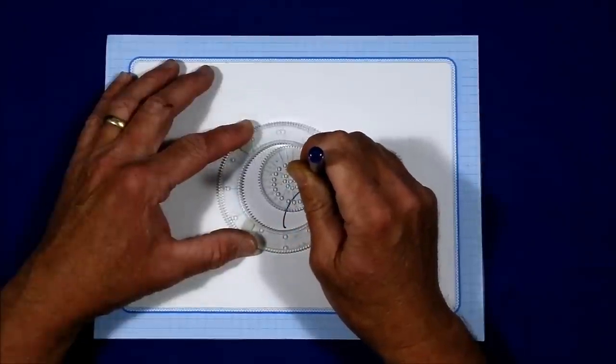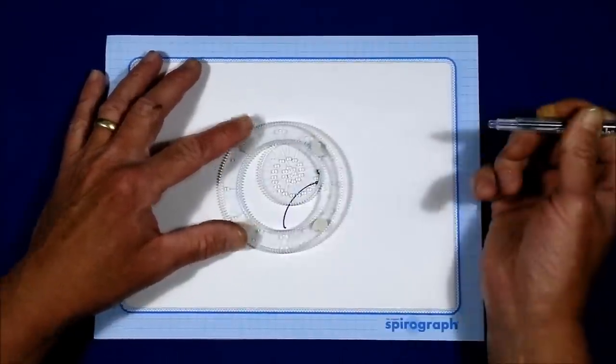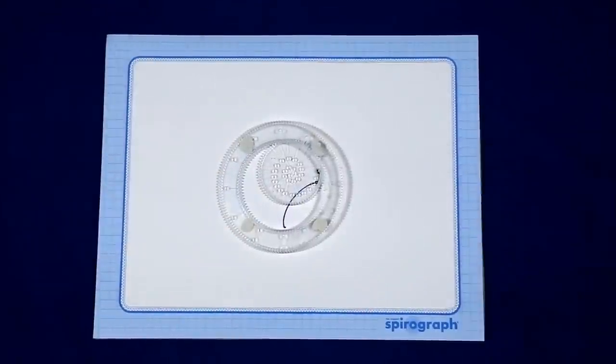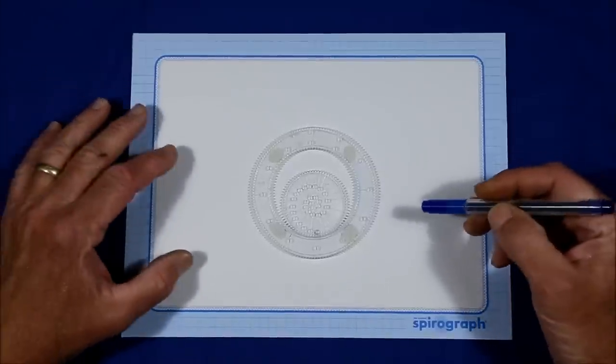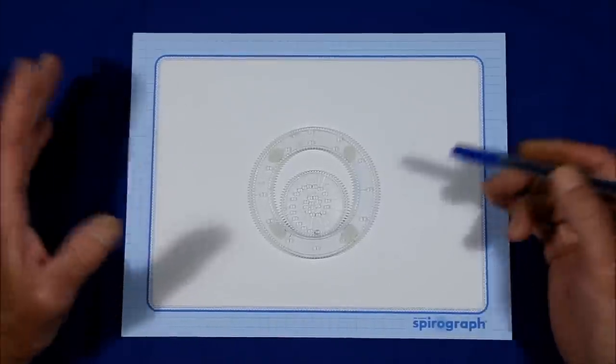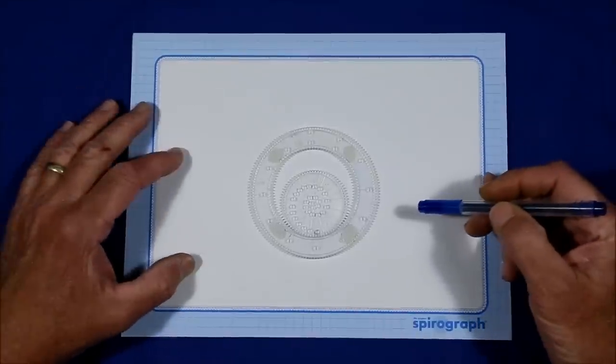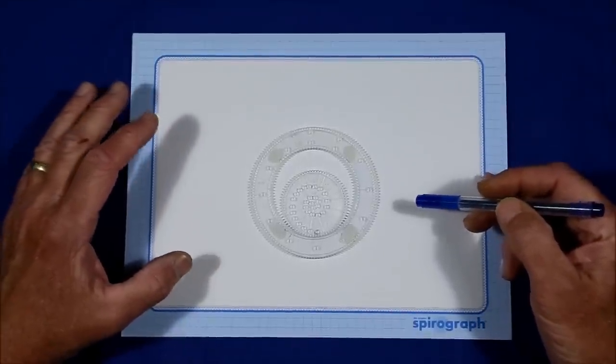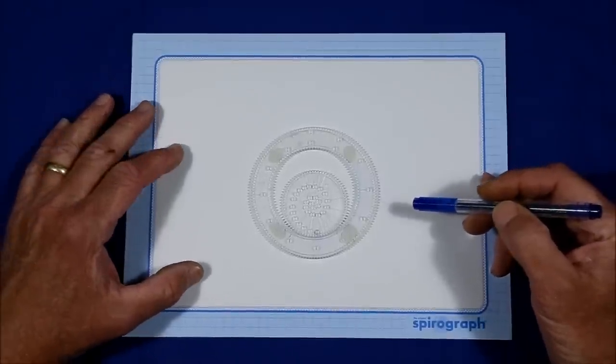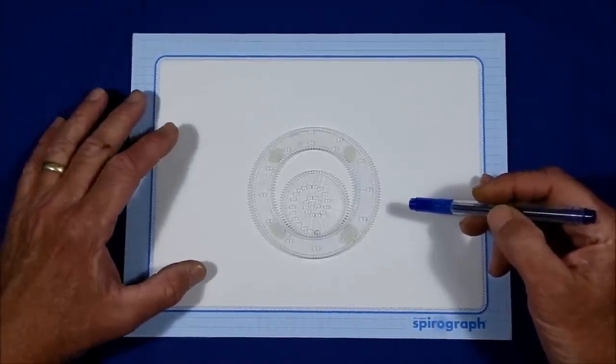Or the opposite, where the inner gear actually digs under the outer gear, creating another skip. This video will explain how to avoid skips like that that can ruin an image and also offer suggestions that will make using a spirograph a lot easier and a lot more fun.